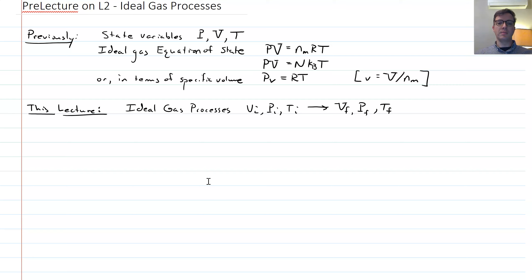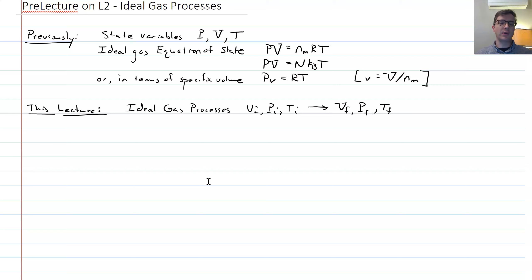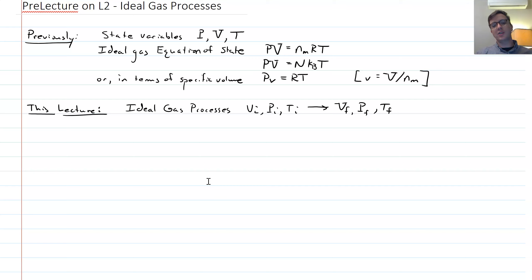So mostly we're interested in containers of gas. For example, this container — imagine it's full of gas and then it comes to equilibrium, so it has a pressure, a volume, and a temperature. We want to talk about how do we go from some equilibrium state to another equilibrium state. I want to take my gas, do something to it, and end up in some other state which is also in equilibrium. This is called an ideal gas process or a thermodynamic process — I start from some initial state and end up in some final state.